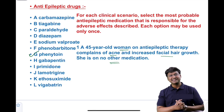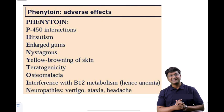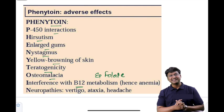Phenytoin is associated with many adverse effects, and the mnemonic for these is PHENYTOIN itself. P stands for P450 interactions; H is hirsutism; E is enlarged gums; N is nystagmus; Y is yellow browning of the skin; T is teratogenicity — fetal hydantoin syndrome, where the baby is born with cleft palate and cleft lip; O stands for osteomalacia, and it also interferes with B12 and folate metabolism, leading to megaloblastic anemia; the last N stands for neuropathies — the individual can have vertigo, ataxia, and headache.